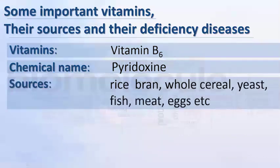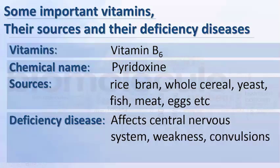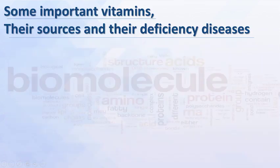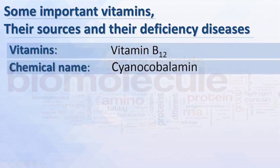Vitamin B6: chemical name pyridoxine; sources include rice bran, whole cereals, yeast, fish, meat, and eggs. Deficiency affects the central nervous system and causes weakness and convulsions. Vitamin B12: chemical name cyanocobalamin.